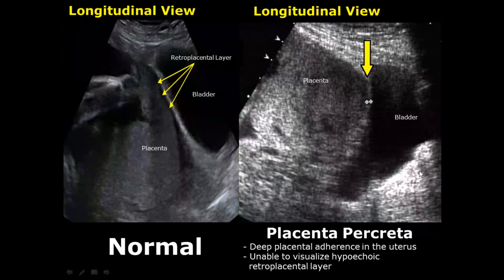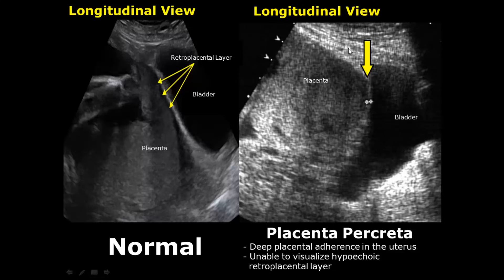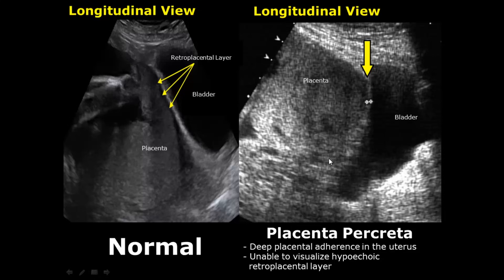Placenta accreta is the abnormally deep adherence of the placenta in the uterus. It has three types based on severity. The mildest form, placenta accreta, is when the placenta adheres deep into the endometrium but does not invade the myometrium. The second, moderate form is placenta increta, in which the placenta invades the superficial part of the myometrium but not deep into it. The most severe form is placenta percreta, in which the placenta invades deep into the myometrium.